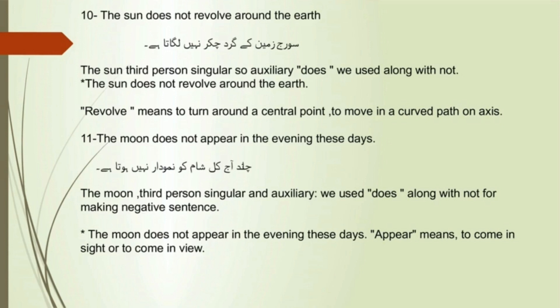Sentence 11: The moon does not appear in the evening these days. 'The moon' is third person singular, and the auxiliary we used here is 'does' along with 'not' — the negative auxiliary — for making the negative sentence. The moon does not appear in the evening these days. Appear means to come into view.